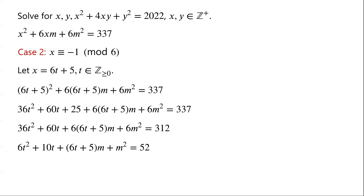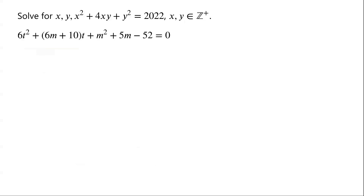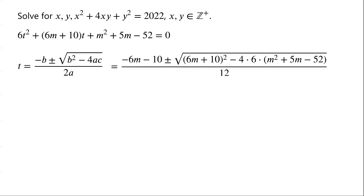Viewing this as a quadratic equation in t, we write: 6t squared plus (6m plus 10) times t plus (m squared plus 5m minus 52) equals 0. Using the quadratic formula with a equals 6, b equals 6m plus 10, and c equals m squared plus 5m minus 52, we get t equals (1/6) times (negative 3m minus 5 plus or minus root of (3m squared plus 337)).